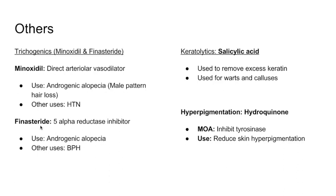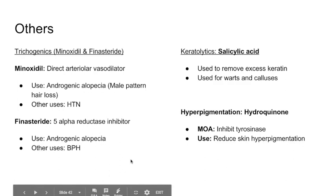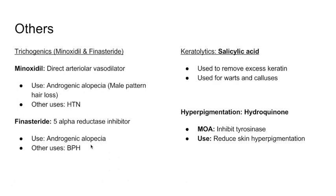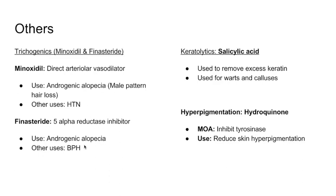The second trichogenic is finasteride, a 5-alpha reductase inhibitor. Testosterone is converted to DHT (dihydrotestosterone) by 5-alpha reductase, and DHT is the active form of testosterone. In androgenic alopecia, hair loss is DHT-dependent, so blocking this conversion promotes hair growth. Finasteride is also used for BPH (benign prostatic hyperplasia), which will be discussed in later chapters.